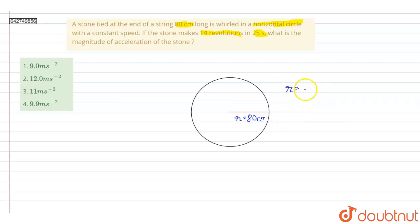Therefore, in SI units, r will be equal to 0.8 meters. This is the radius given. We are given 14 revolutions in 25 seconds, so from here we can calculate the frequency, and using that we can calculate the angular velocity.